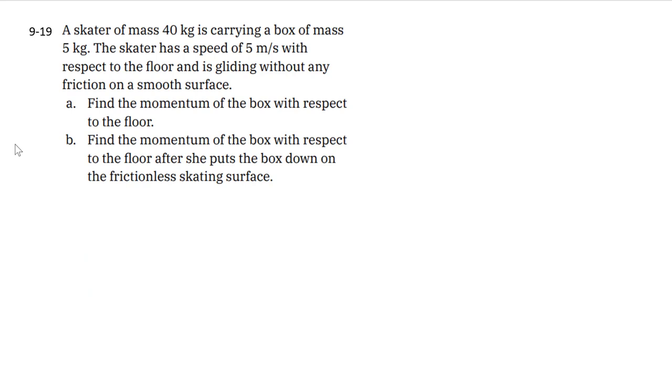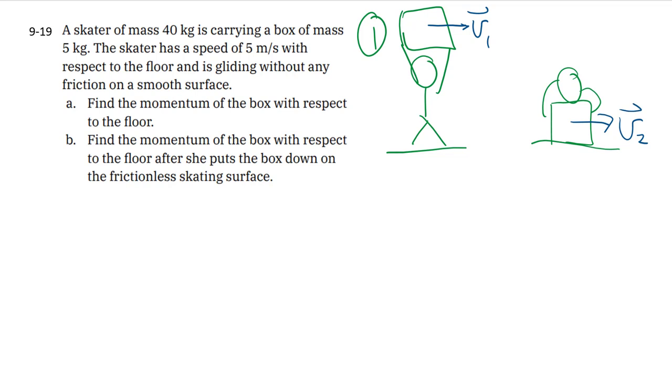In part b, the skater puts the box down. So there's a pretty poor drawing of a skater before, and then the skater puts the box down onto the ground. Presumably, there's an initial velocity and a velocity afterwards. And if we want to relate these two times, you use the conservation of momentum. Initial plus change gets you the final.